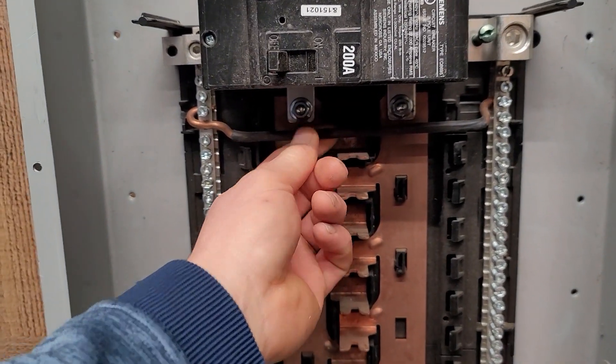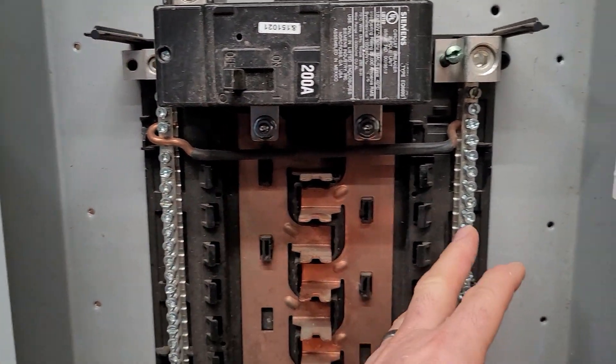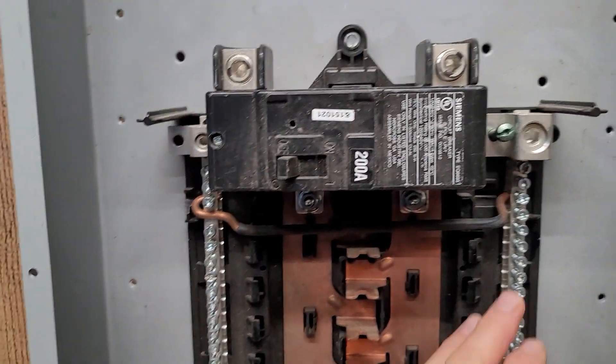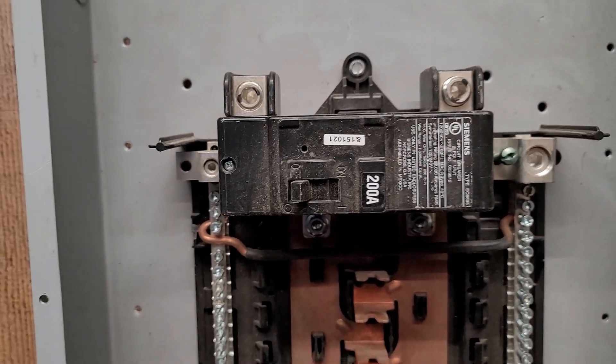But I want to talk about this bar right here. Currently this bar is connecting these two bars right here. So if this were the first point of disconnect I could land grounds and neutrals here. I could land grounds and neutrals here as long as my main bonding jumper was installed and everything else was up to code.